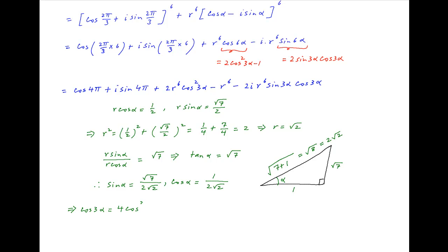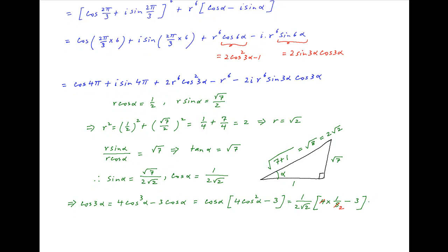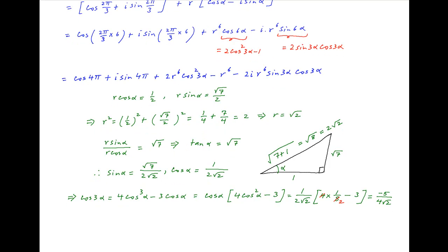Therefore cos 3 alpha, which equals 4 times cos cubed alpha minus 3 times cos alpha, equals cos alpha times 4 times cos squared alpha minus 3, which equals 1 upon 2 root 2 multiplied by 4 times 1 upon 8 minus 3. This simplifies to minus 5 divided by 4 root 2.